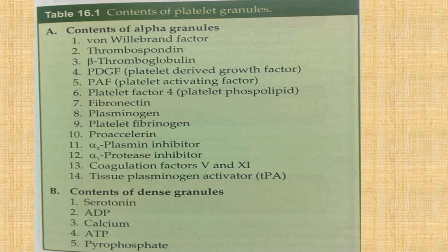In detail, alpha granules contain von Willebrand factor, thrombospondin, beta-thromboglobulin, platelet-derived growth factor, platelet activating factor, platelet factor 4, fibronectin, plasminogen, platelet fibrinogen, proaccelerin, alpha-2 plasmin inhibitor, alpha-1 protease inhibitor, coagulation factors 5 and 11, and tissue plasminogen activator. Dense granule contents are non-protein substances: serotonin, ADP, calcium, ATP, and pyrophosphate. Alpha granules are more in number with more contents; dense granules are fewer with fewer contents.